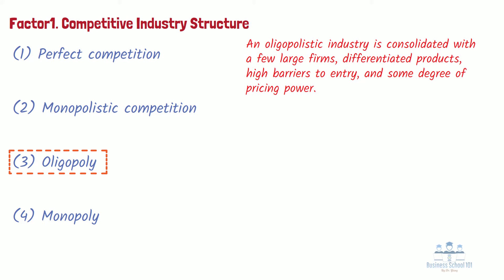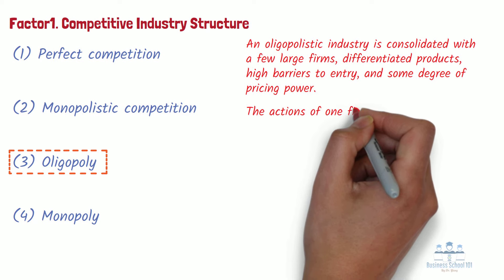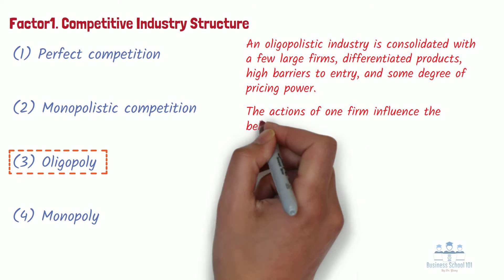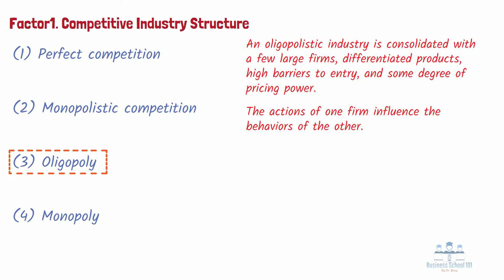A key feature of an oligopoly is that the competing firms are interdependent. With only a few competitors in the mix, the actions of one firm influence the behaviors of the other. Therefore, each competitor in an oligopoly must consider the strategic actions of the other competitors.